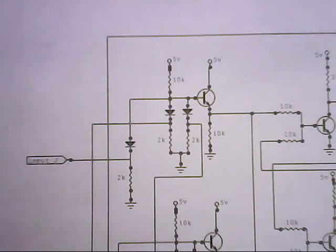This is typical of one AND gate, a three-input AND gate. It consists of five resistors and three diodes and a transistor.